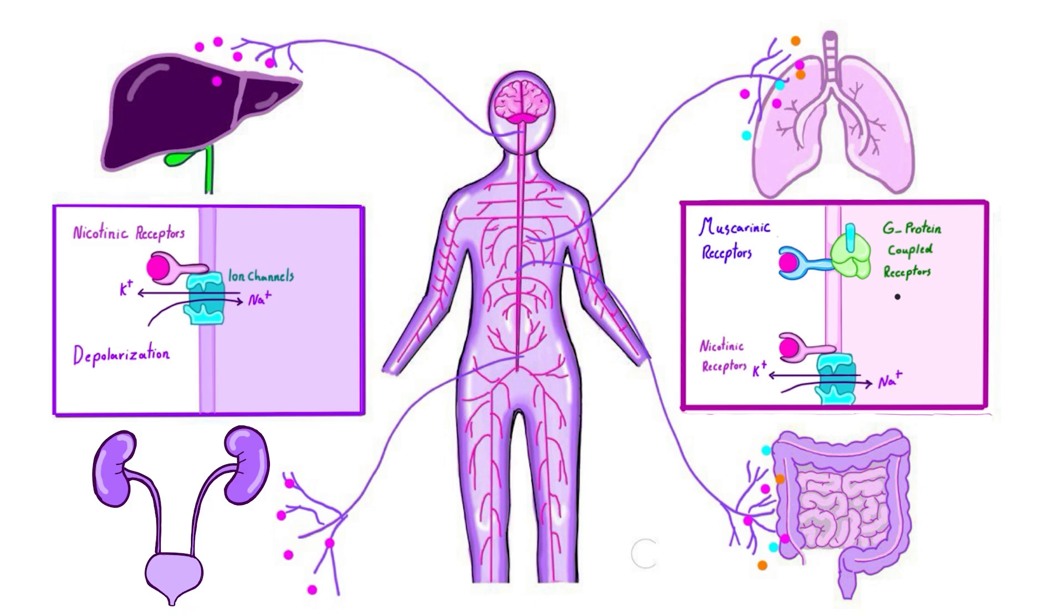Ever wondered why your heart races when you're scared or why you suddenly feel calm after the danger is gone? That's your autonomic nervous system at work. The sympathetic and parasympathetic systems constantly keeping your body in balance. In this video, we're breaking it all down. How these two systems work, what makes them different, and why they're so important for your health. Let's dive in.